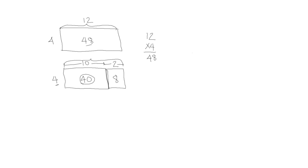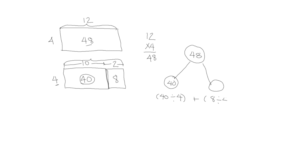I can also show this as a number bond. I have my total of 48, and I've broken it down into 40 and 8. I've used the distributive property to separately divide first the 40 by 4, and then the 8 by 4 — distributing the 4 over both of these values. 40 divided by 4 is 10, plus 8 divided by 4 is 2, and I also get 12 by showing it with a number bond and the distributive property.